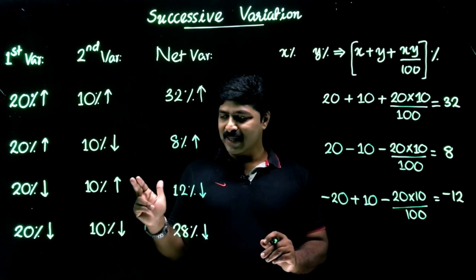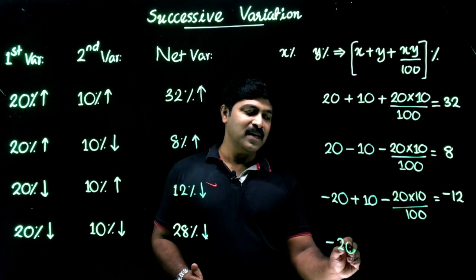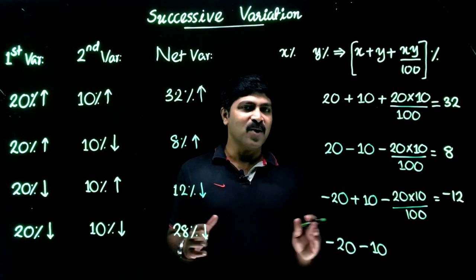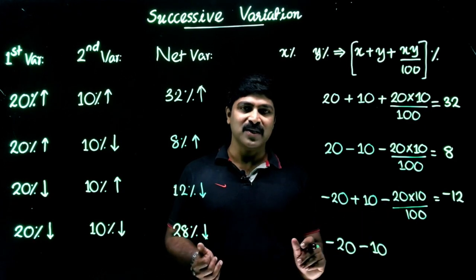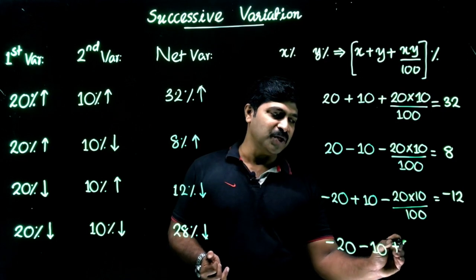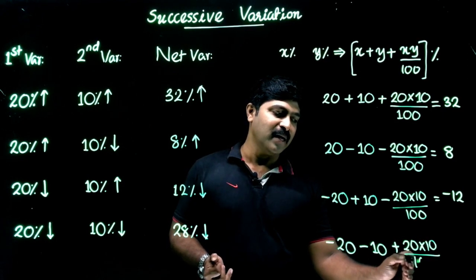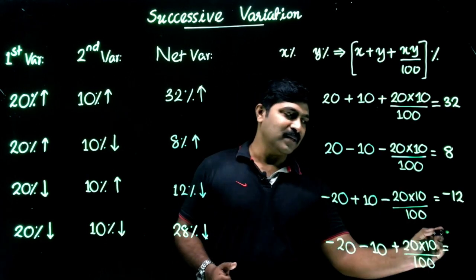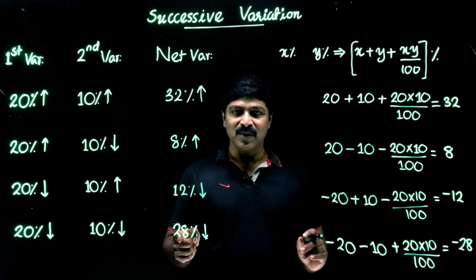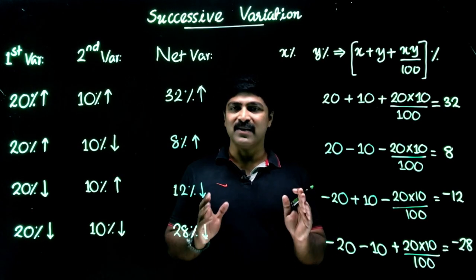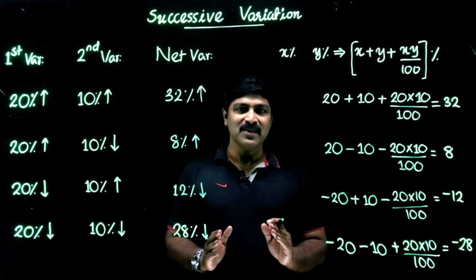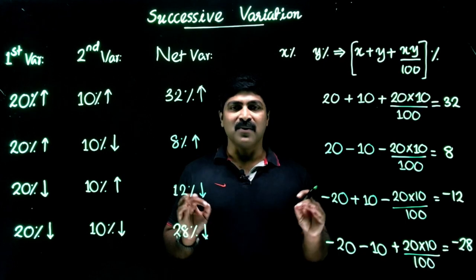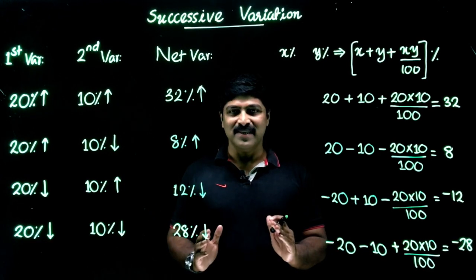The last and another very important result: 20% decrease, then successively 10% decrease. So this is −20 and −10. Both quantities are negative, so their product becomes positive: +(20 × 10 / 100) = +2. The resultant is −20 − 10 + 2 = −28, which is 28% decrease. This is a very useful trick for finding percentage applications like this. In the further sessions I will explain the practical application of this result in various topics. Thanks for watching.